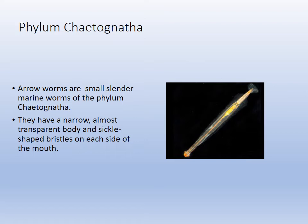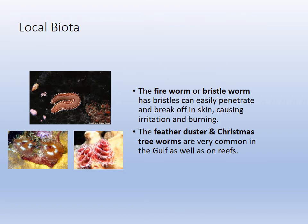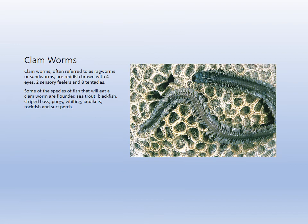Chaetognatha are arrow worms — they're planktonic and open ocean, so we won't see them. Annelids are the most numerous of the marine worms. They have a closed circulatory system and hemoglobin blood. Earthworms are the most familiar, but in the ocean we have a variety: fireworms, sandworms, feather duster worms, and Christmas tree worms are among the different worms present.